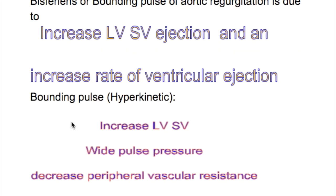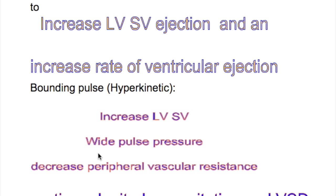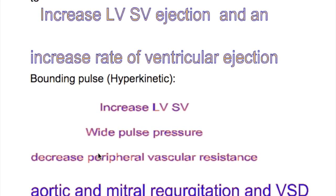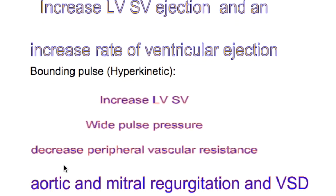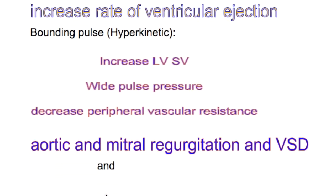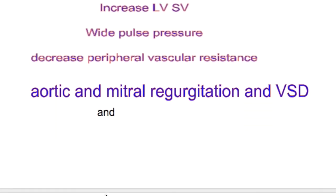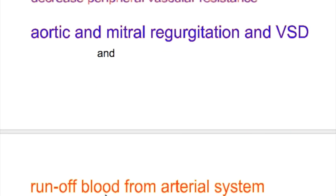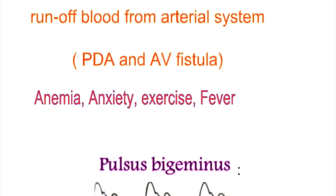The bounding or hyperkinetic pulse increases left ventricular stroke volume, widens pulse pressure, and decreases peripheral resistance. It is also seen in mitral regurgitation, ventricular septal defect, PDA, AV fistula, anemia, anxiety, fever, and exercise.